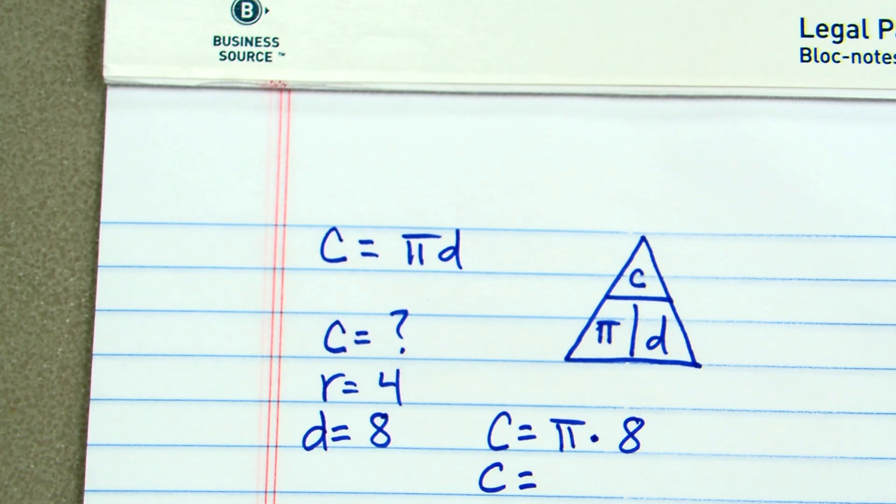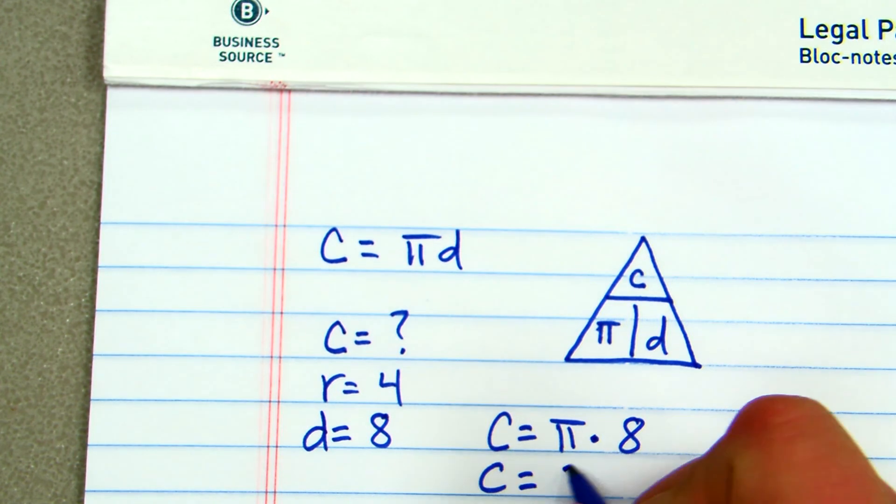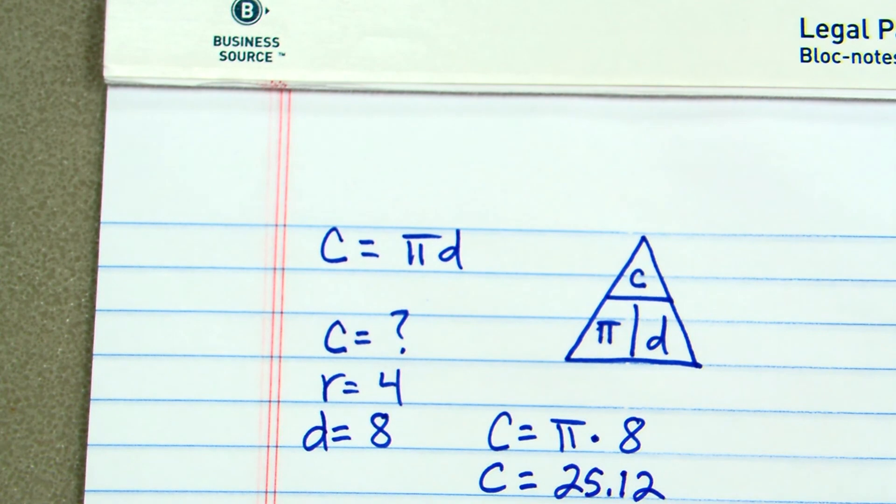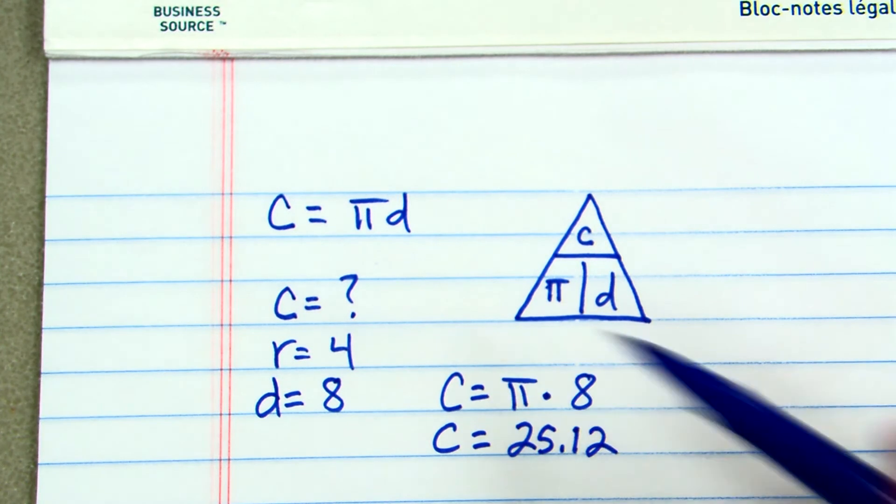I'm going to get my calculator out and say 8 times 3.14, and it's going to give me 25.12 for my circumference. Not too hard. And that formula works both ways, but I think the triangle method will help you out greatly.